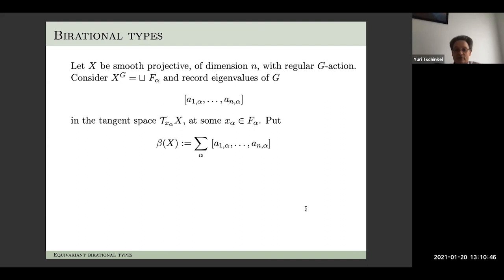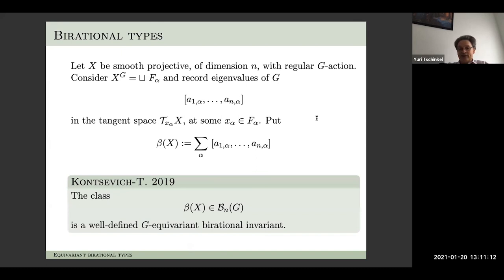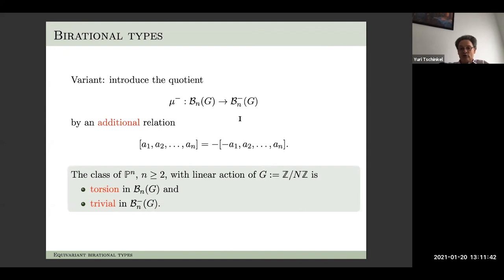Where do the invariants come from? We look at our smooth projective variety with regular G-action, look at the fixed point locus, stratify by components, and record the characters of G appearing in the tangent space at some point in the stratum. Then we take a sum of these symbols and view this sum as an element in the group B_n(G), which is a quotient of the module spanned by symbols by the relations written down. The theorem is that this is a well-defined G-equivariant birational invariant.